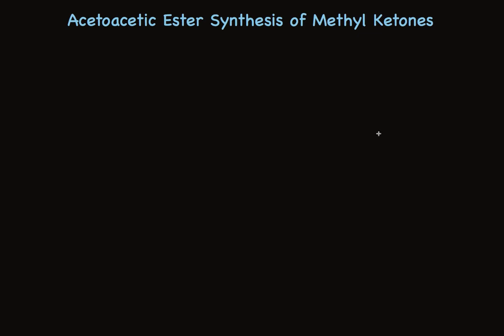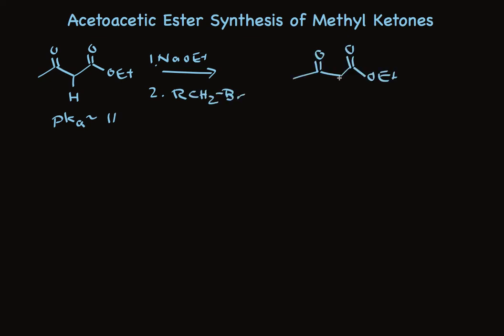Well, look at this. Ethyl acetoacetate has a very acidic hydrogen. pKa is about 11. So treatment with a base like ethoxide completely removes the proton. Once we've made the enolate, it can be treated with the alkyl halide to add the alkyl group between the two carbonyl groups.